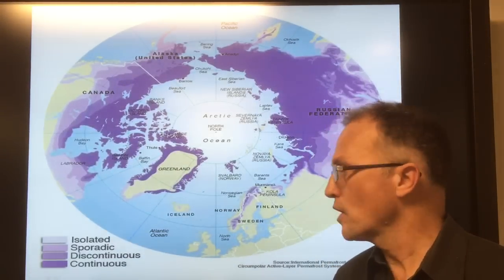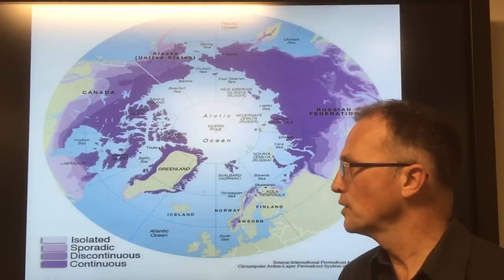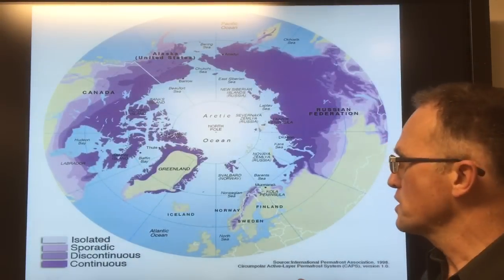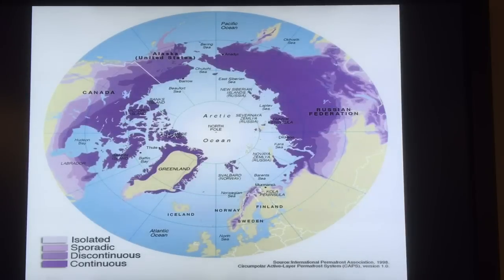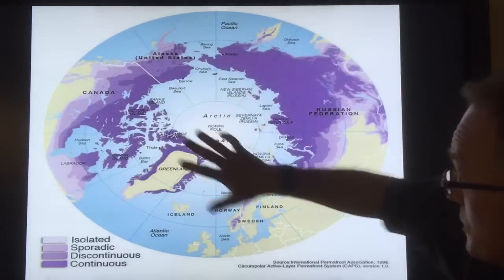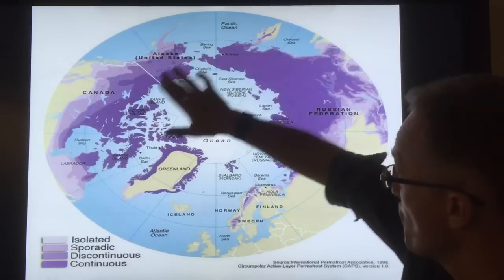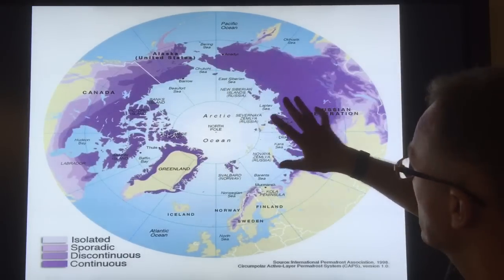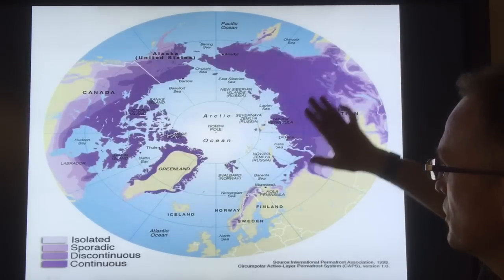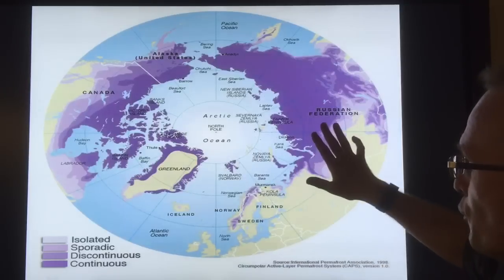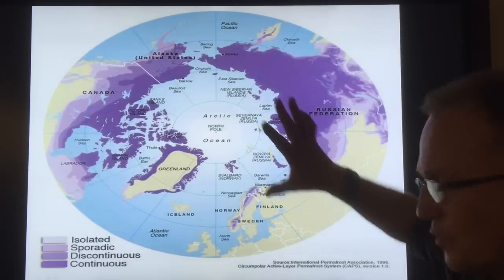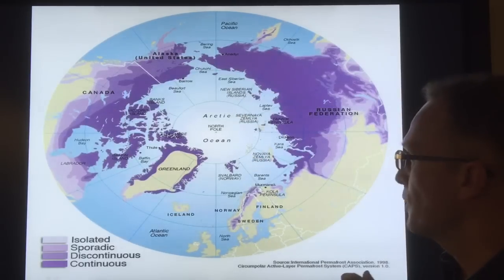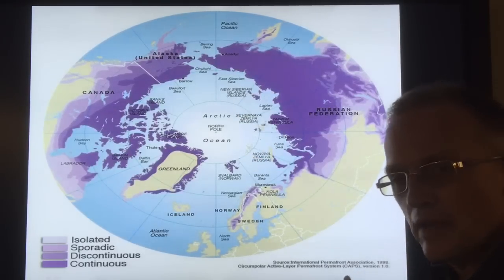Hello, I'm Paul Beckwith from the University of Ottawa Laboratory for Paleoclimatology. This is a continuation of previous videos. I'm talking about the terrestrial permafrost up in the Arctic region. Surrounding the entire Arctic Ocean there's continuous permafrost furthest north, then discontinuous as you go further south, then sporadic, and finally isolated patches. The Arctic is a region warming faster than any other on the planet.